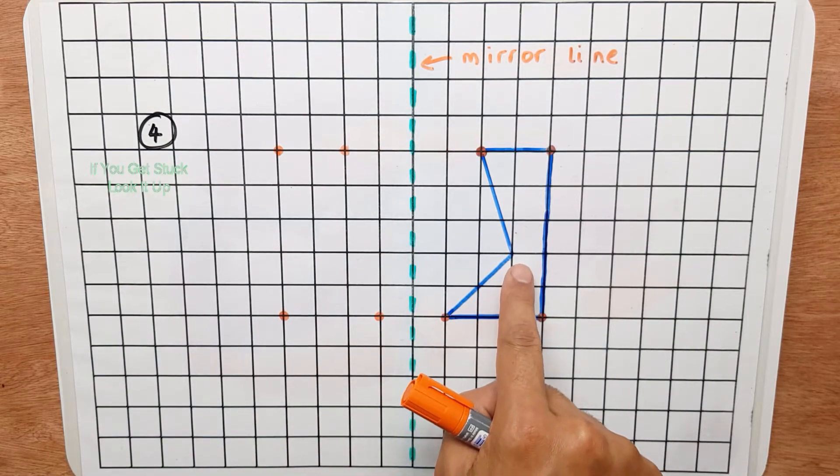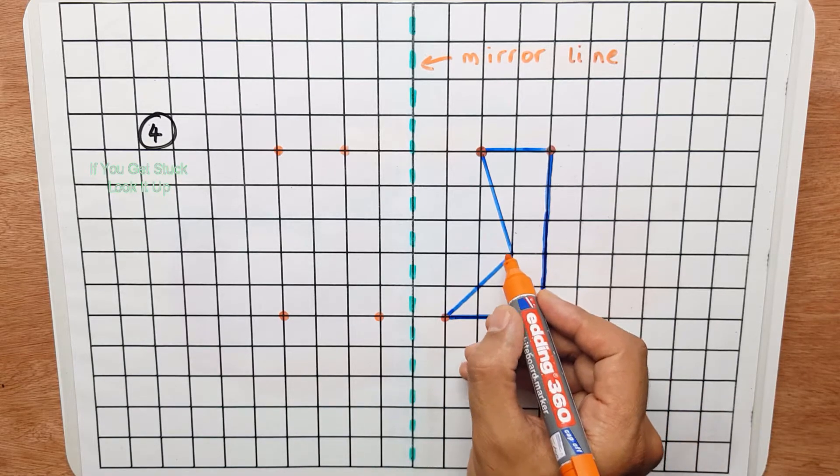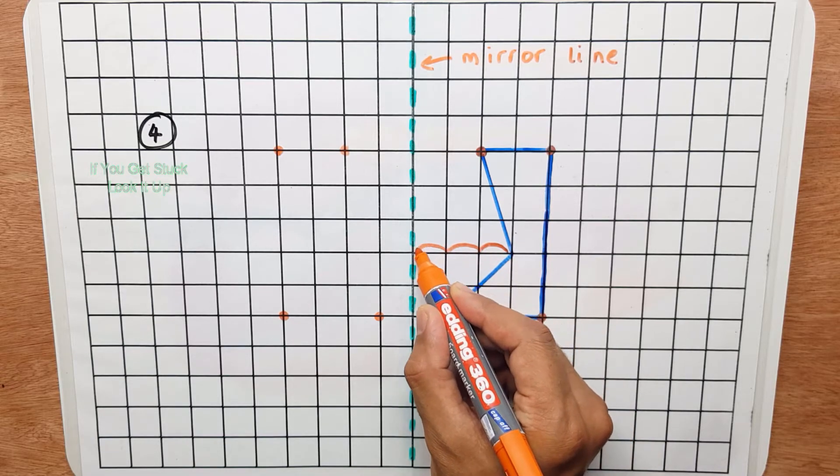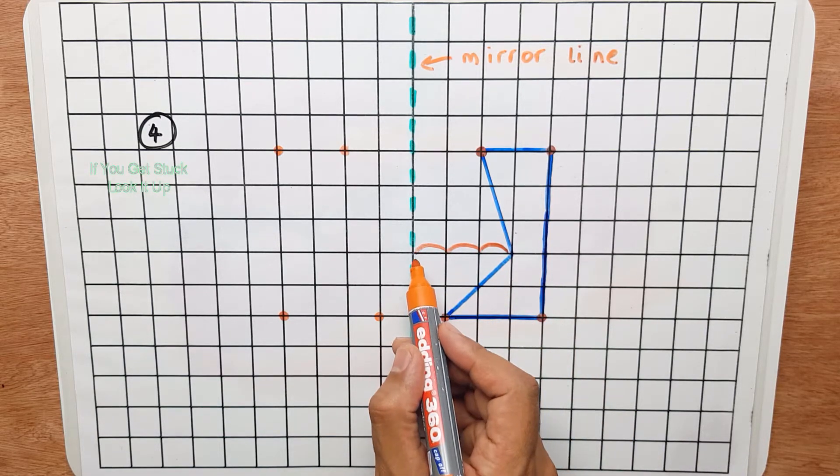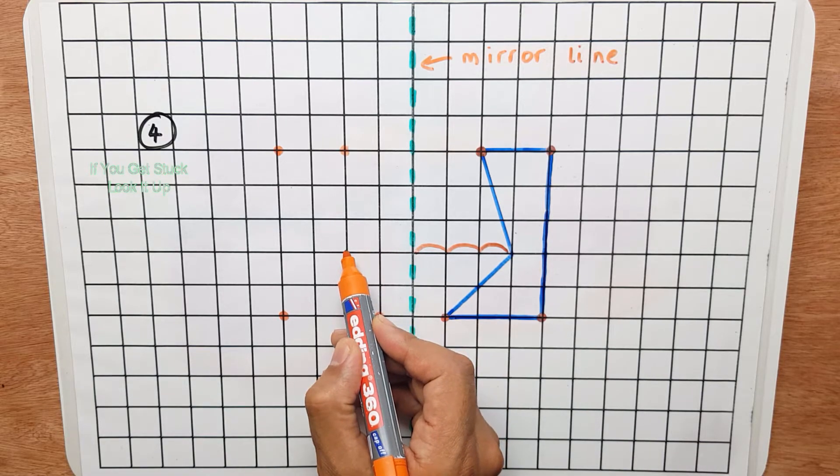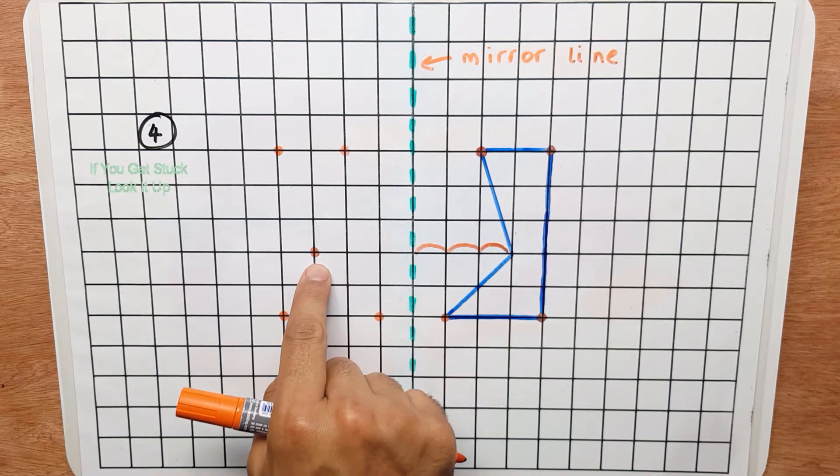And there's one more point or vertex that we need to reflect and that's that there. So let's have a look. One, two, three jumps up to the mirror line. So now we do one, two, three jumps out. So that is our fifth point.